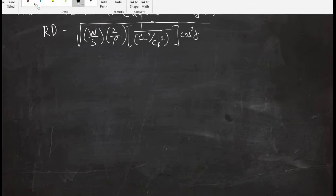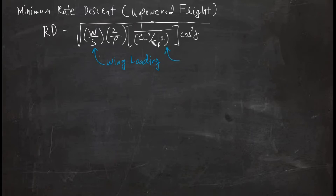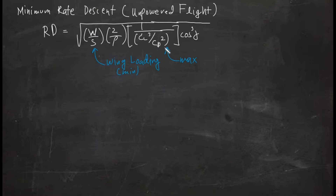That is all under a square root, multiplied by cosine³γ. To solve for the minimum rate of descent using simple logic: your wing loading should be minimum, and your CL³/CD² should be maximum, because it appears in the denominator — to get the minimum rate of descent, this ratio must be maximum.